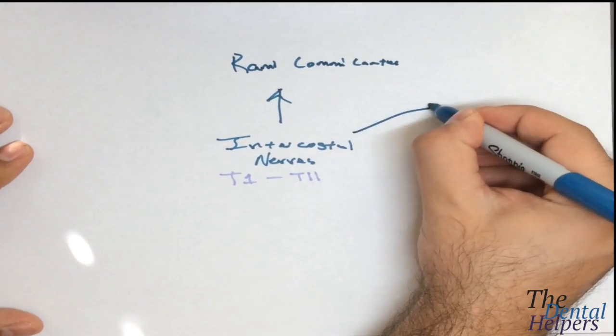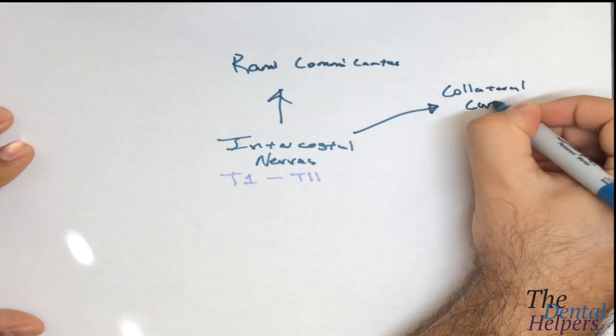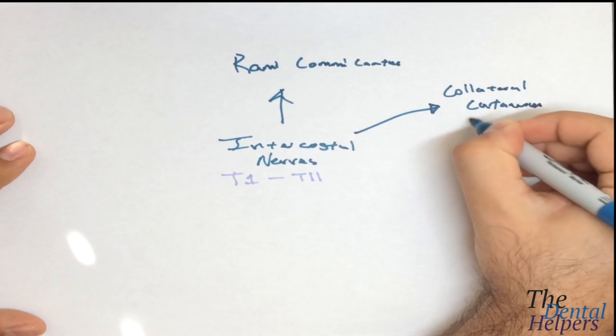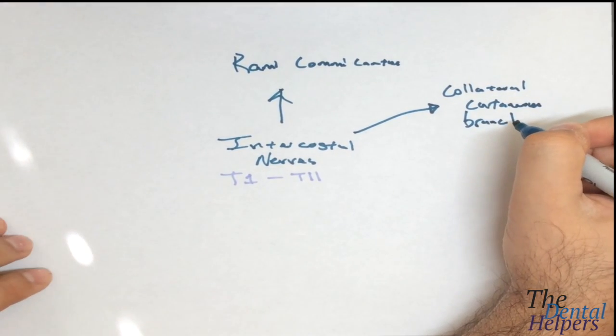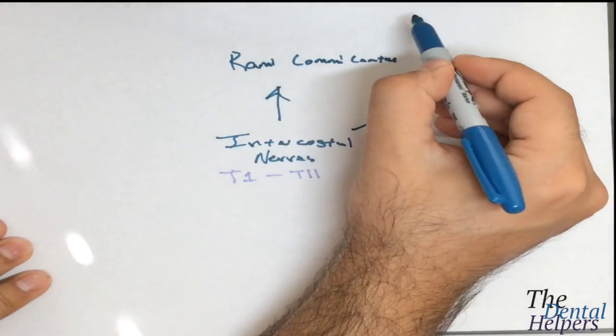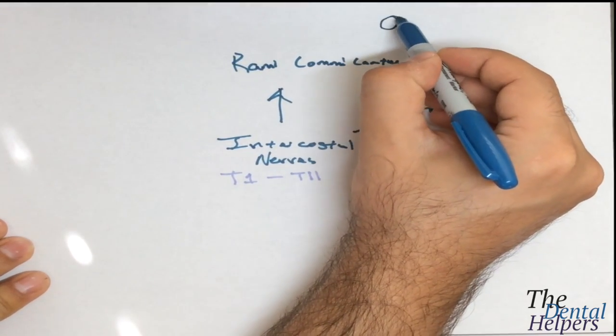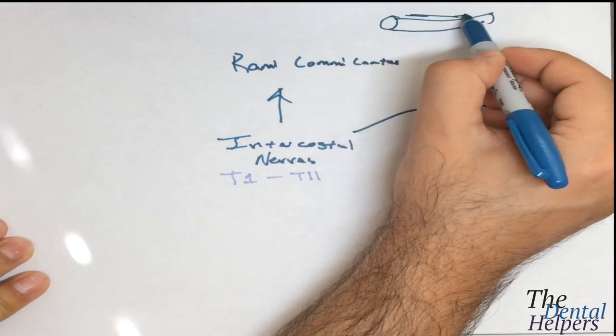The next is the collateral cutaneous branch. It runs parallel to the main nerve on the upper border of the rib. If we're looking at an individual rib, it's going to lie on the upper border.